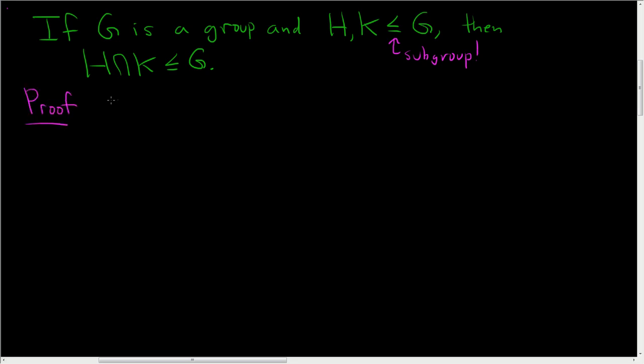Suppose H and K are subgroups of G. There's three things to show. First, we have to show that the intersection is not empty. That's pretty easy. Since H is a subgroup of G, we have E in H.